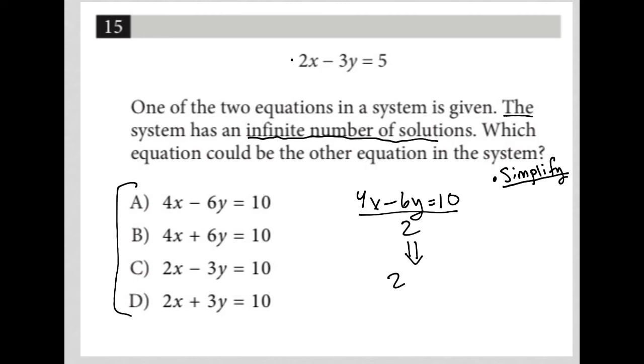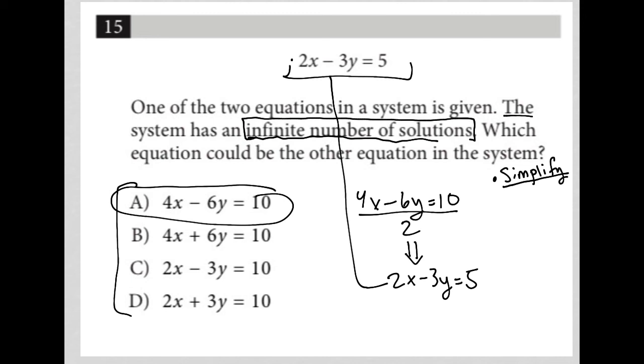it becomes 2x minus 3y equals 5, and because that is the exact same equation as our starting material here, then we know that that must be the correct answer, because that is how we would get an infinite number of solutions.